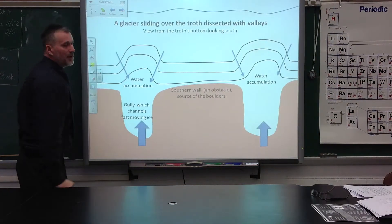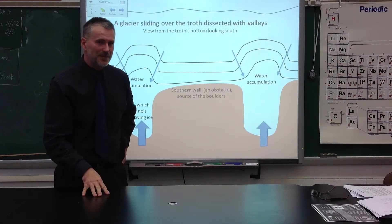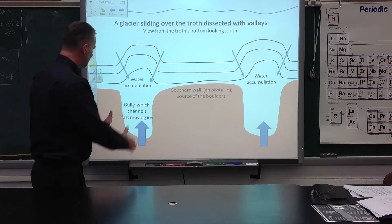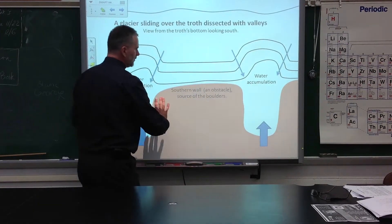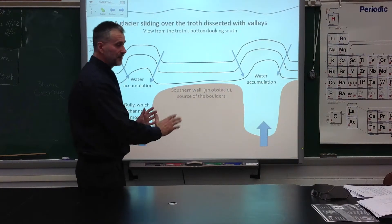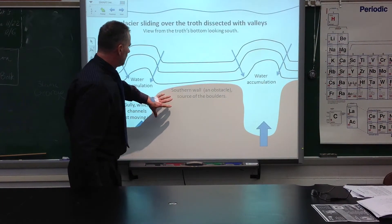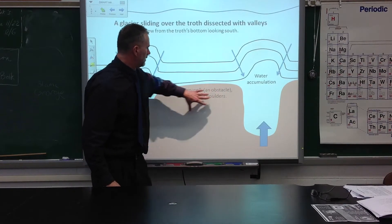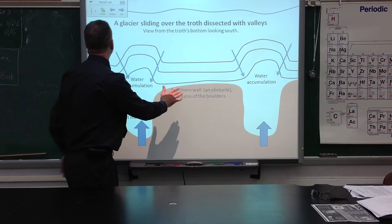Now imagine that we are inside the glacier and we try to analyze what exactly happened. We are standing inside the trench — there are those perpendicular valleys, and this is the wall — standing facing south. The ice is moving in this direction. The area between valleys becomes an obstacle on the path of the glacier, and this area is going to be abraded the most.